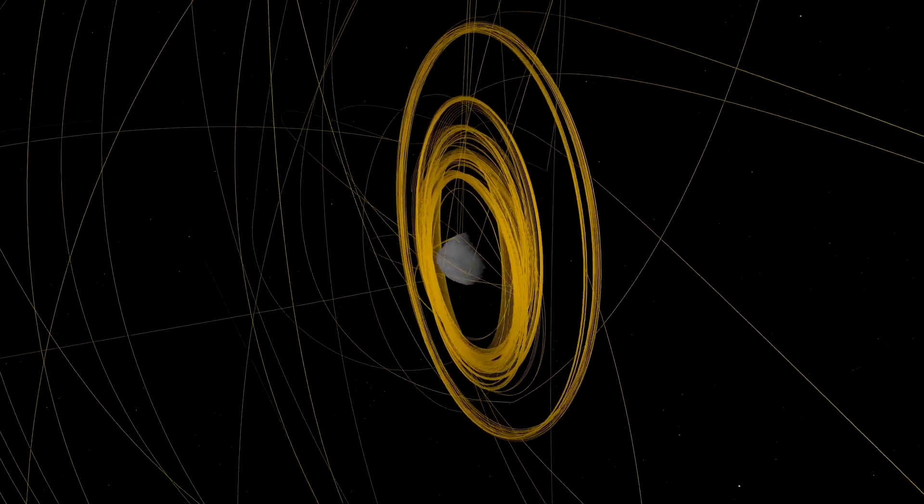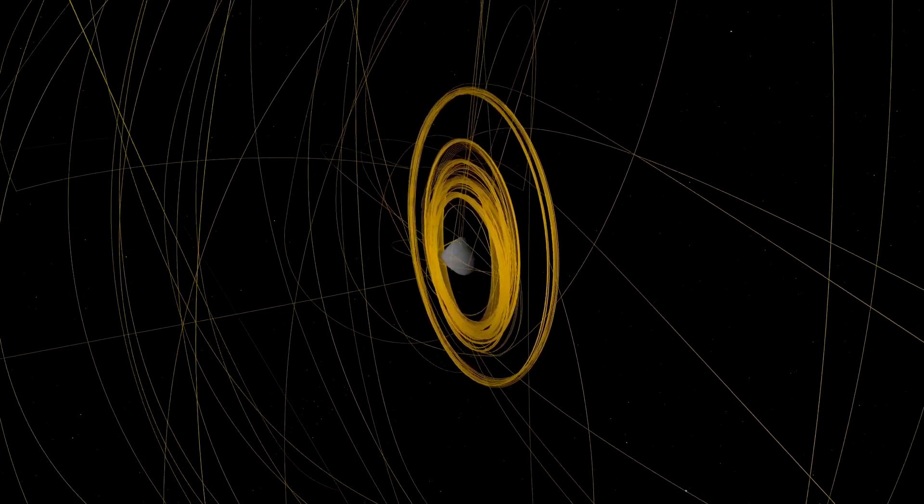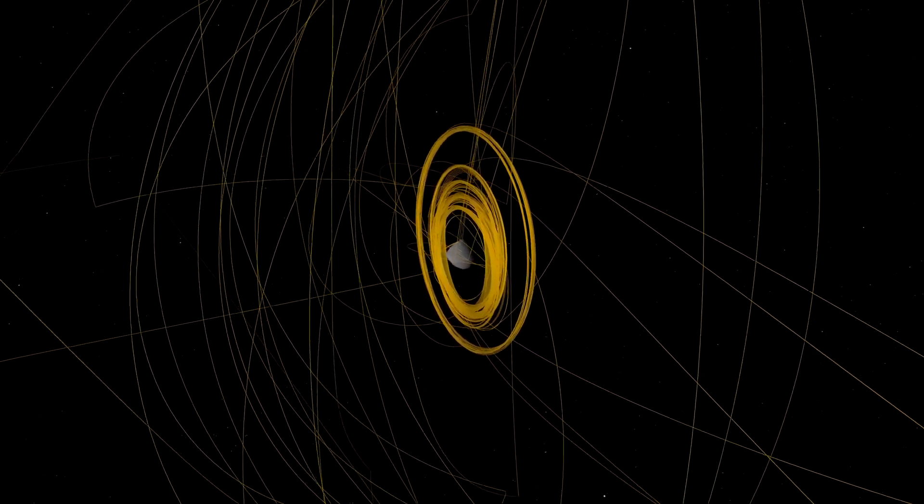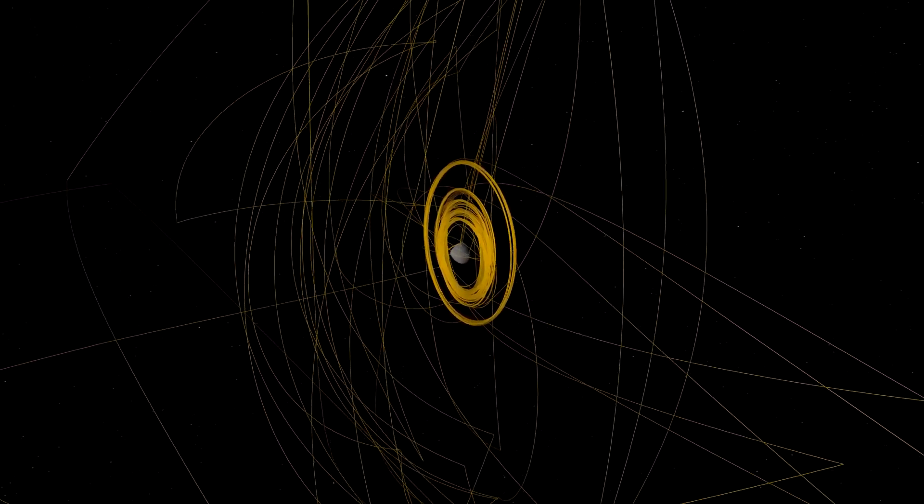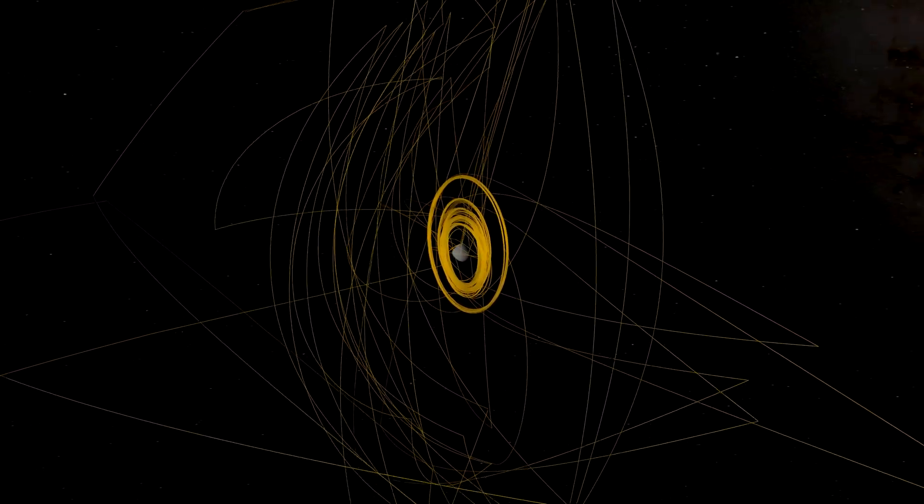Following TAG, the spacecraft drifted to a safe distance away from Bennu. By the end of October, mission controllers determined that it had exceeded its goal of collecting 60 grams of asteroid material.